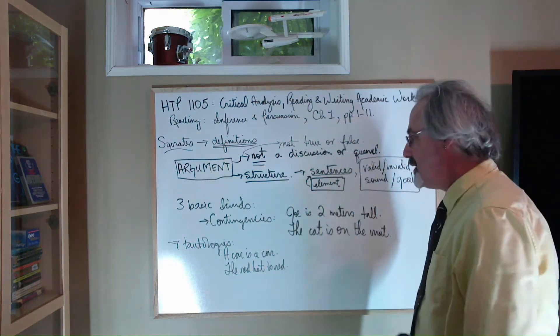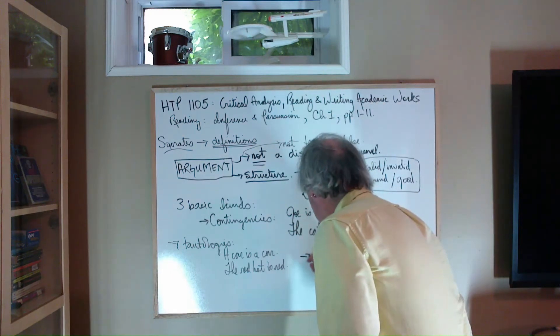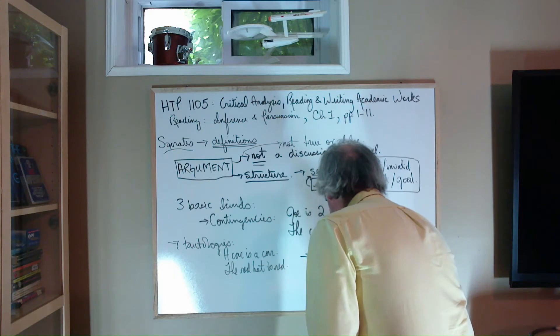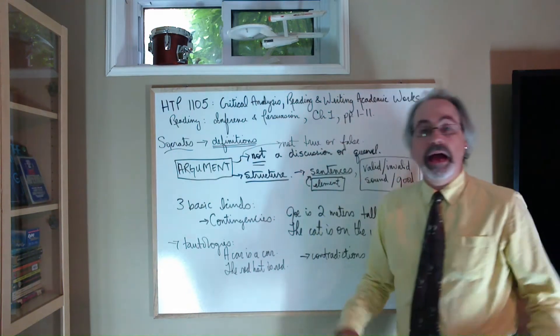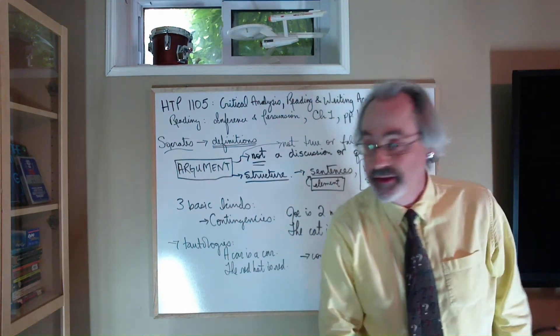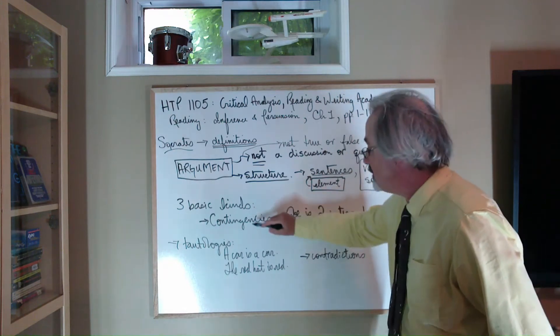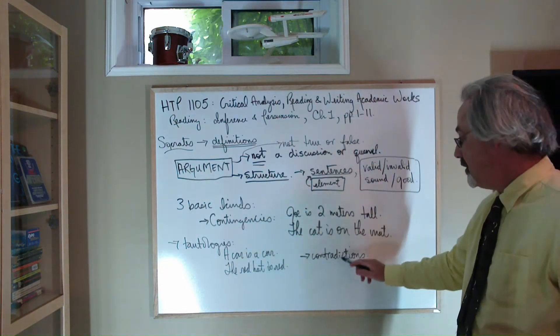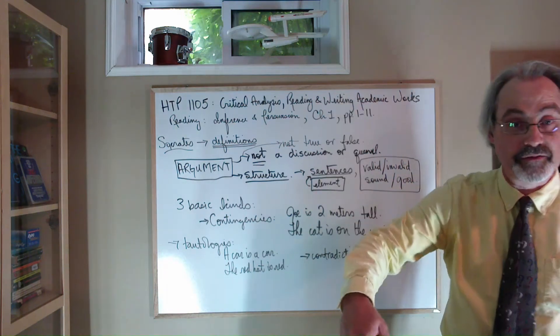But that brings us to our third and final sentence type. Contradictions. Those are, as you would expect, those things, if contingencies can be true or false, tautologies have to be true, contradictions then have to be false.